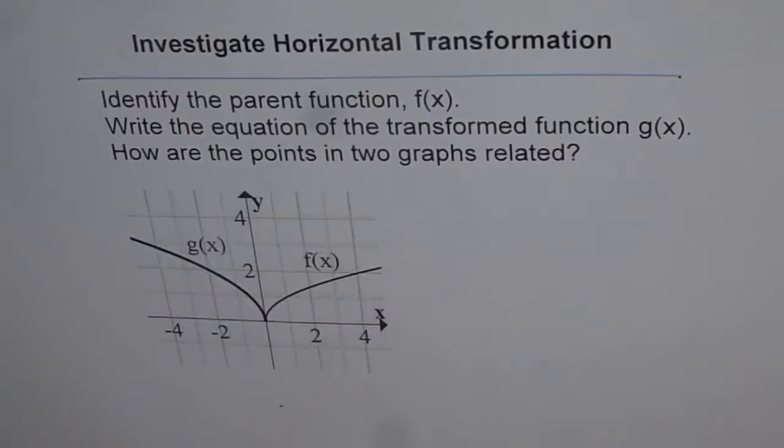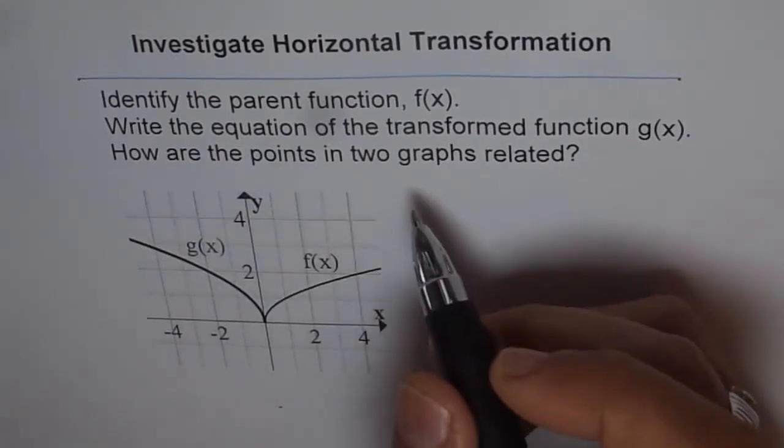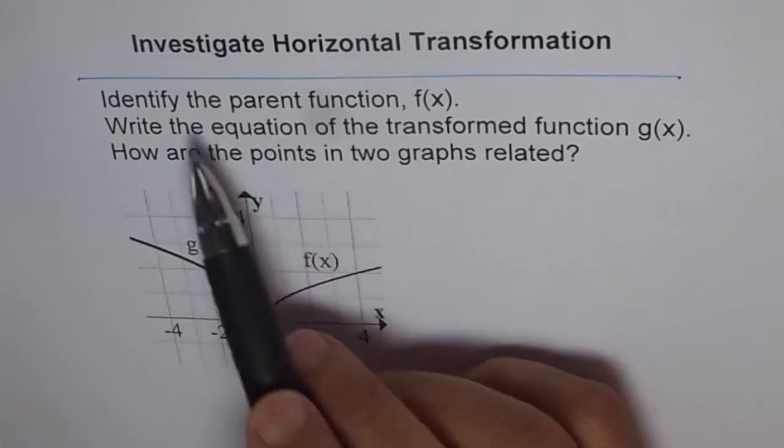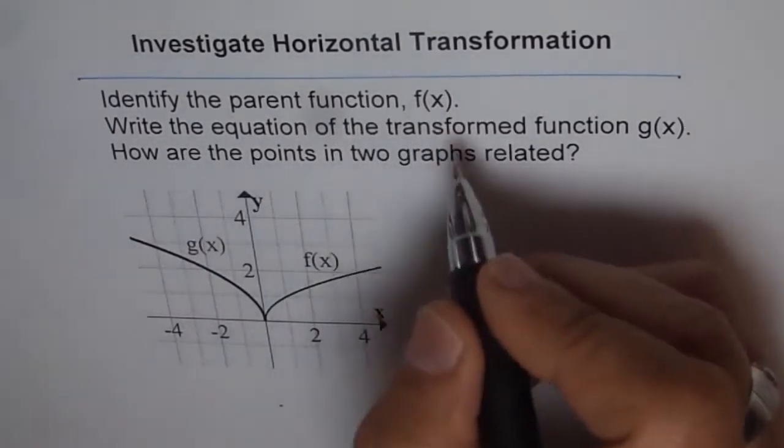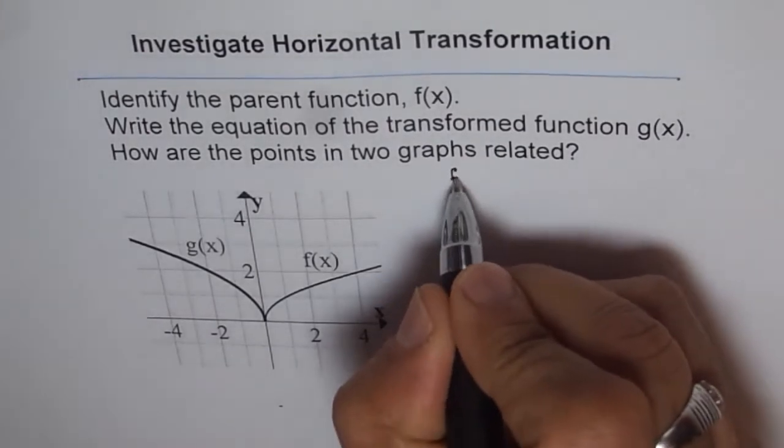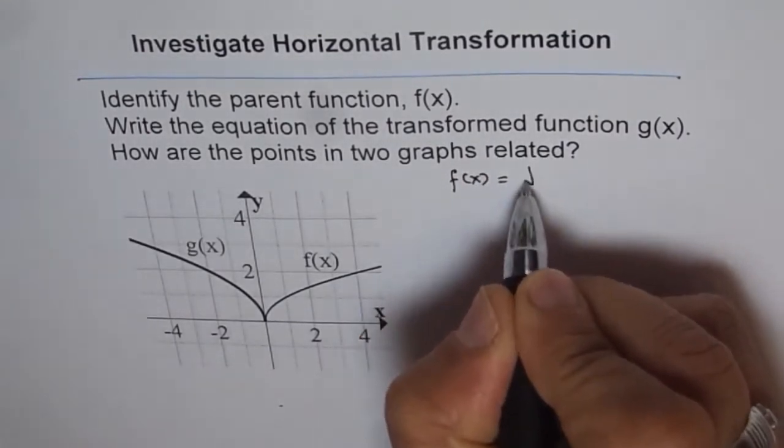Now we are trying to investigate horizontal transformation with the help of square root parent function. So for us, the question here is, identify the parent function f of x versus square root of x. So we have a parent function where f of x is equal to square root of x.